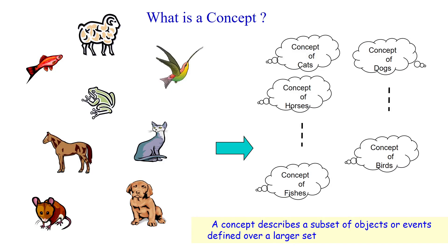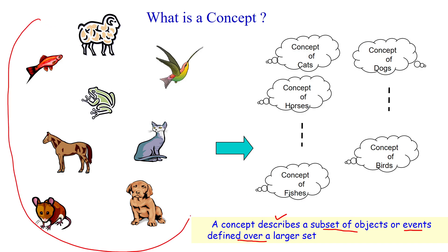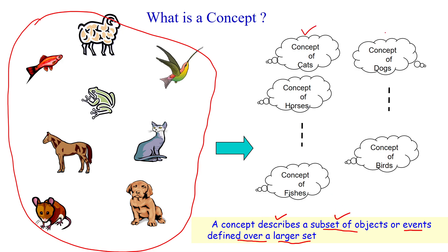What is a concept in machine learning? A concept describes a subset of objects or subset of events which are defined over a large set of examples. For example, a large set of training examples having a collection of animals gives subsets — one subset is the concept of cats, another is the concept of dogs, another is the concept of horses, and another is the concept of fishes and birds.